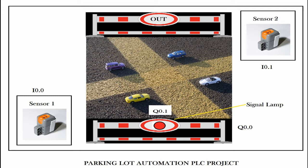In the PLC program, I 0.0 represents Sensor 1 and I 0.1 represents Sensor 2. For outputs, Q 0.0 represents the barrier — if the barrier is open, Q 0.0 is high (1). We also have a lamp which will turn red if four vehicles are already inside the parking lot.